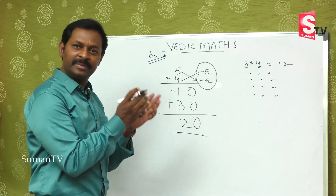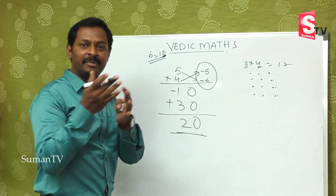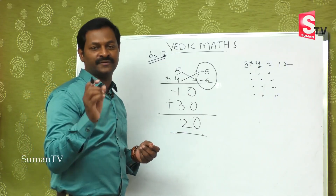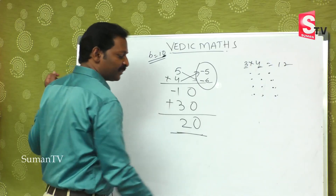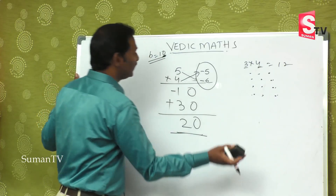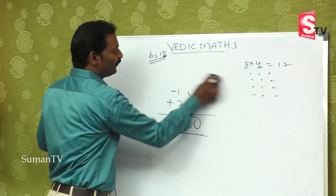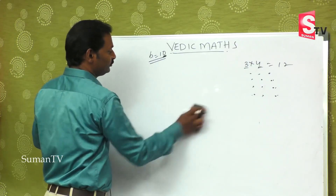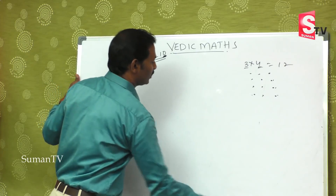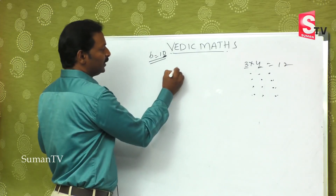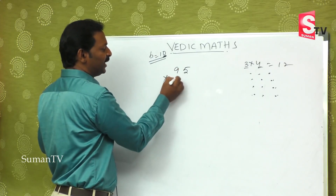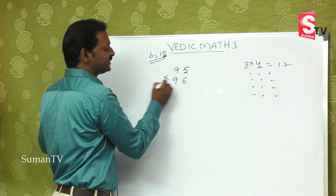So, it may be a small number or it may be a big number — but this method is definitely useful for you. Suppose if I go to numbers like 95 multiplied by 96.